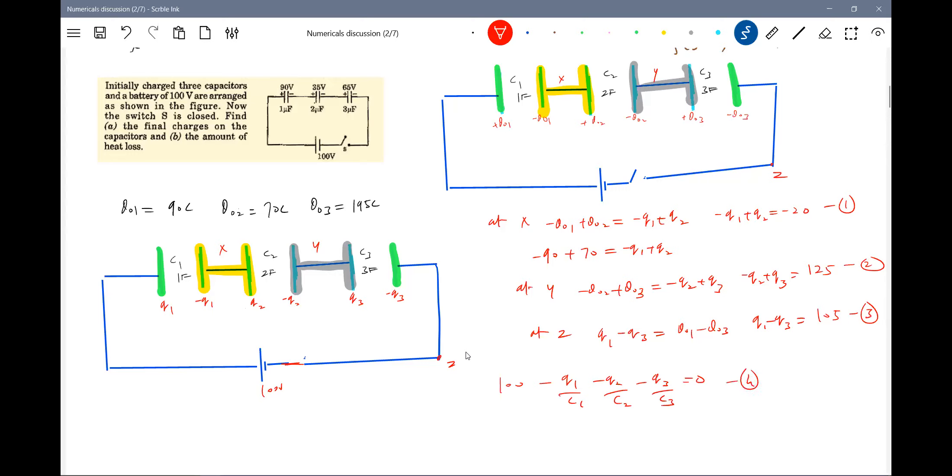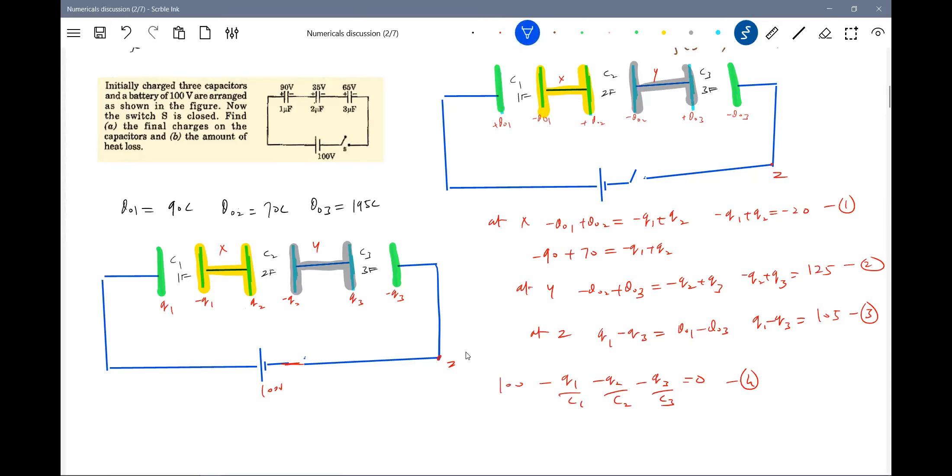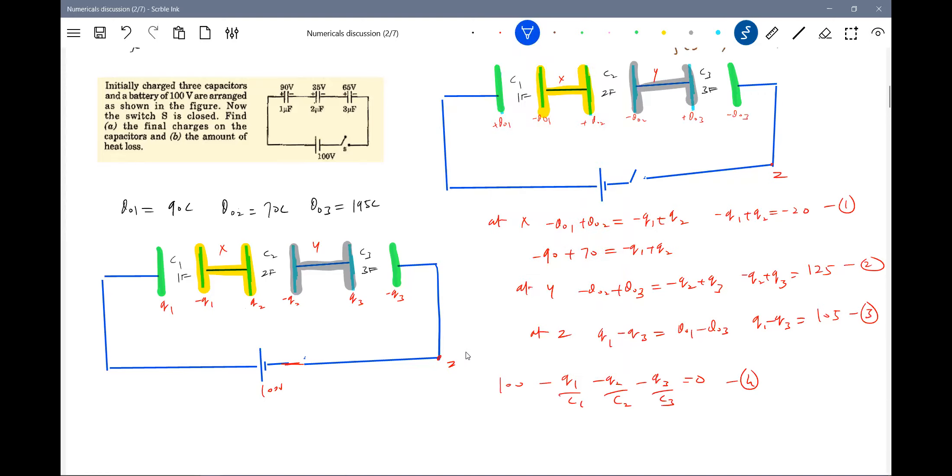He's asking heat generated, what to do for heat generated. I think the problem is not at all, it's further asking the heat generated for that. What has been an initial energy of the circuit. You have to calculate the final energy. Then you have to check how much of charge flown through the battery Delta Q.